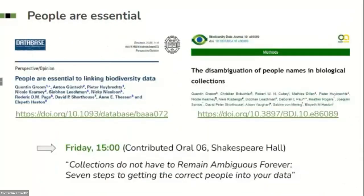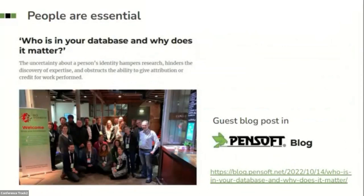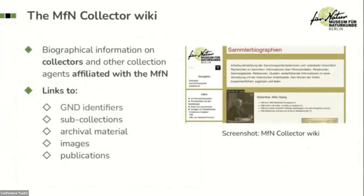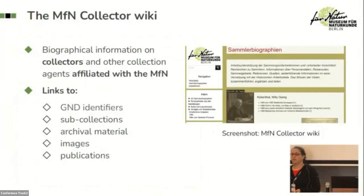Two recent publications by a large international collaborative effort led by Elspeth Haston and Quentin Groom have been published on this topic. Our museum has a so-called 'Sammler-Wiki,' compiled over several years, containing valuable biographical information not only on collectors but also on suppliers of specimens, preparators, taxidermists, and other people involved in the collections process. This wiki includes basic biographical information, GND identifiers from the German national library, links to sub-collections, and links to archival material such as correspondence or estates.